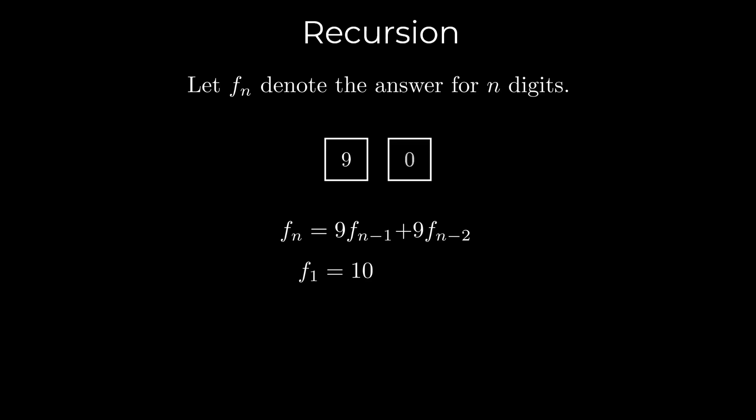Similarly, the second digit could also be any number from 0 to 9, again giving us 10 choices. This results in a total of 100 possible numbers. However, the number 11 is invalid because it contains adjacent ones. Therefore, f2 is 99.